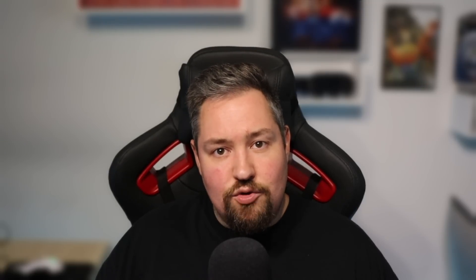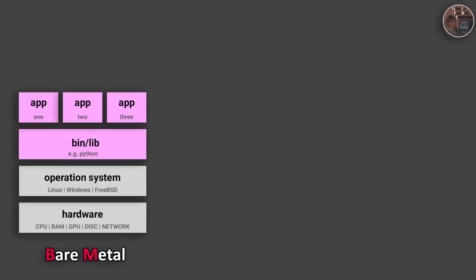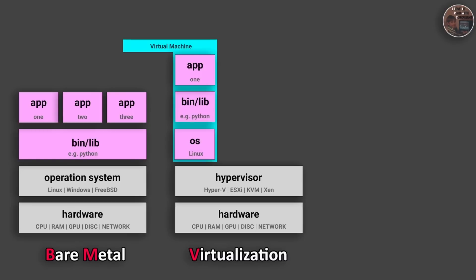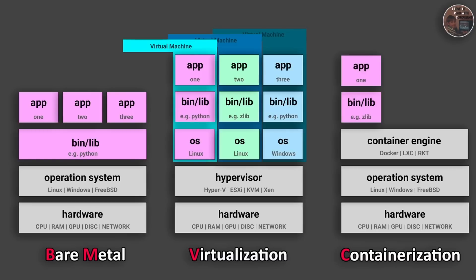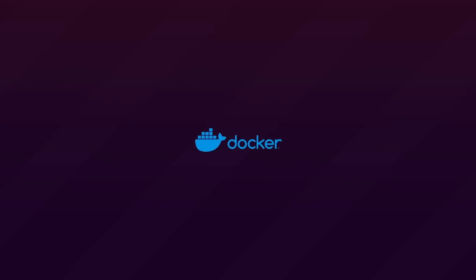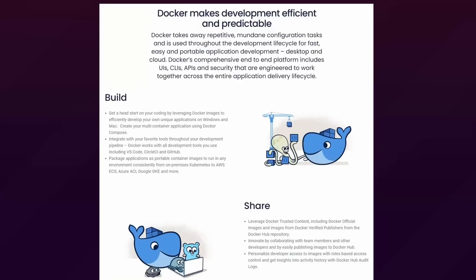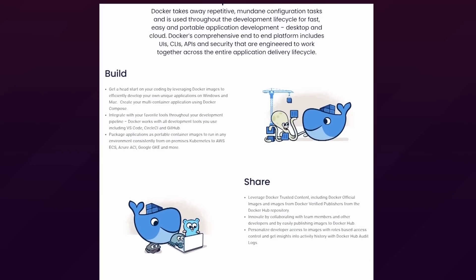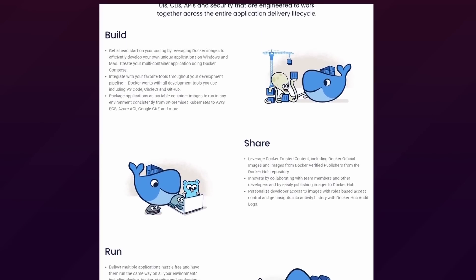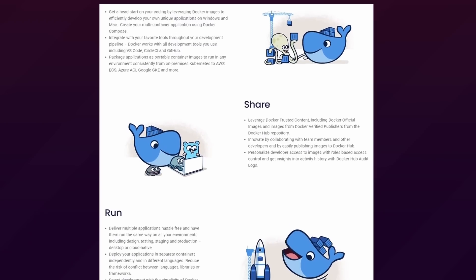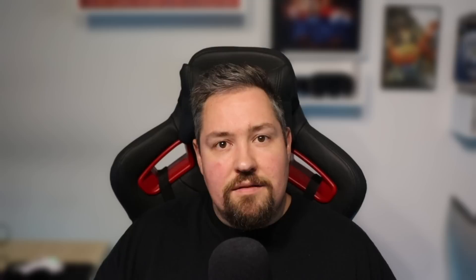We'll be using Docker to run our stable diffusion model. Docker is a platform that allows us to create, deploy, and run applications in containers. This ensures our application runs in the same environment regardless of where it's hosted, making our setup reproducible and platform independent. If you're not familiar with Docker, don't worry — I'll guide you through the whole process and the basics. With these prerequisites in mind, we can start setting up stable diffusion.